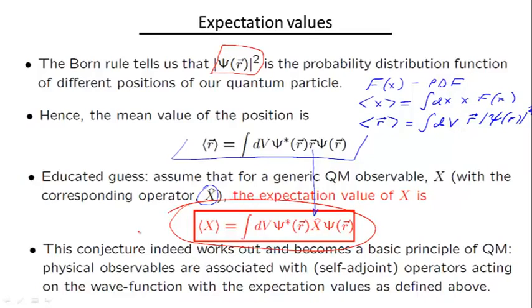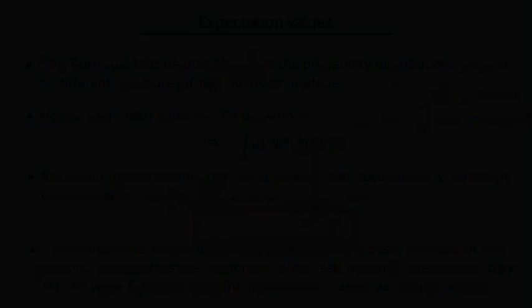This becomes a very important and basic principle of quantum mechanics. Physical observables are associated with self-adjoint operators acting on the wave function with the expectation value defined as above.